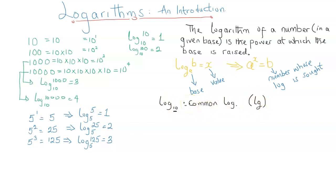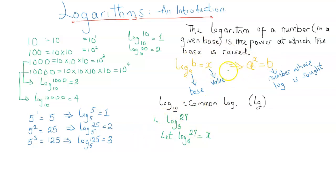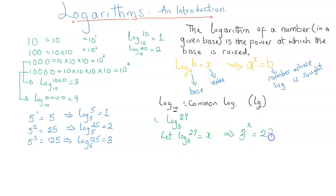We can apply the definition of logarithms to solve problems. For example, to solve log 27 base 3, the first thing we need to do is represent this with a letter since it has a numerical value. Let log 27 base 3 equal x. Now we apply the definition that relates the logarithmic version to the indices version. Since log b to base a equals x implies a to the power of x equals b, comparing with log 27 base 3, we see that a is 3 and b is 27, giving us 3 to the power of x equals 27.